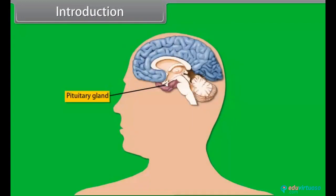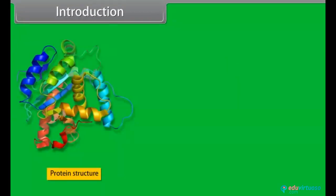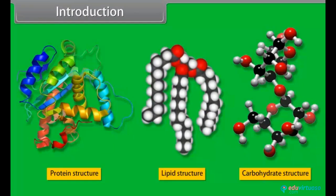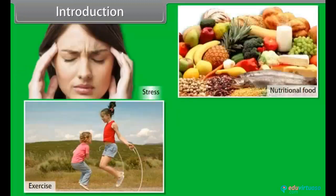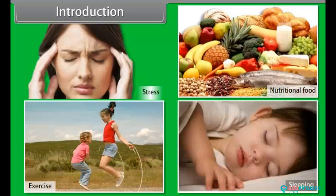Majorly, growth hormones are responsible for stimulating growth of the body, which are released by the pituitary gland. Growth hormone has significant effect on the metabolism of protein, lipid and carbohydrates. The production of growth hormone depends upon many factors such as stress, exercise, nutrition, and sleep.